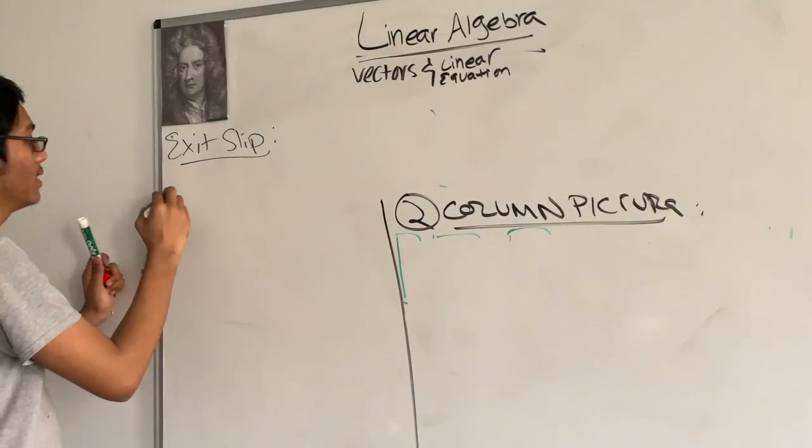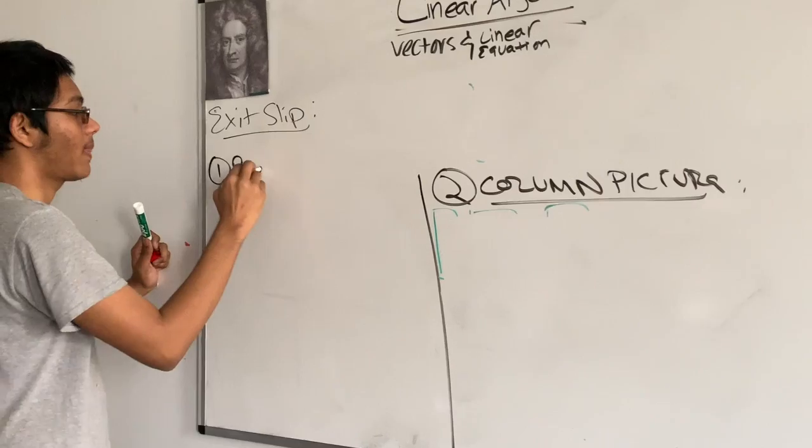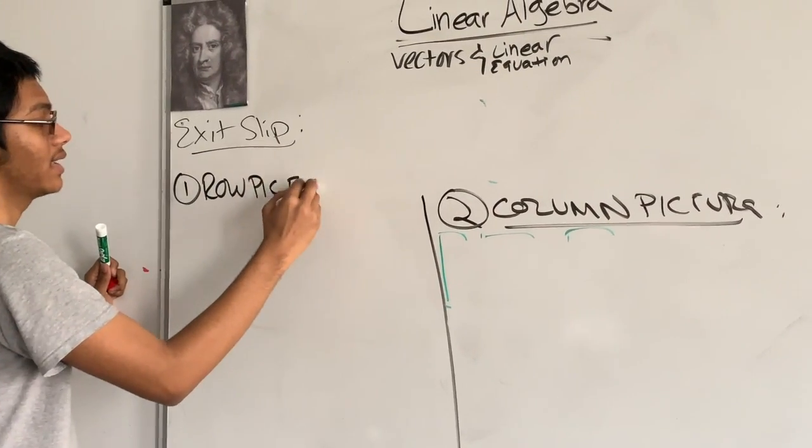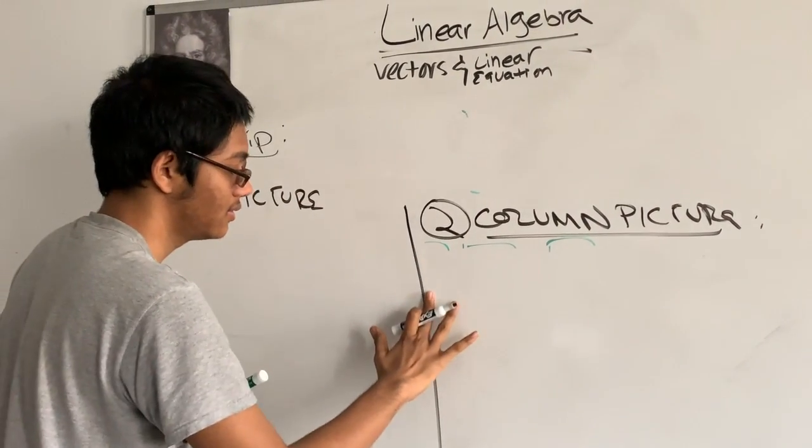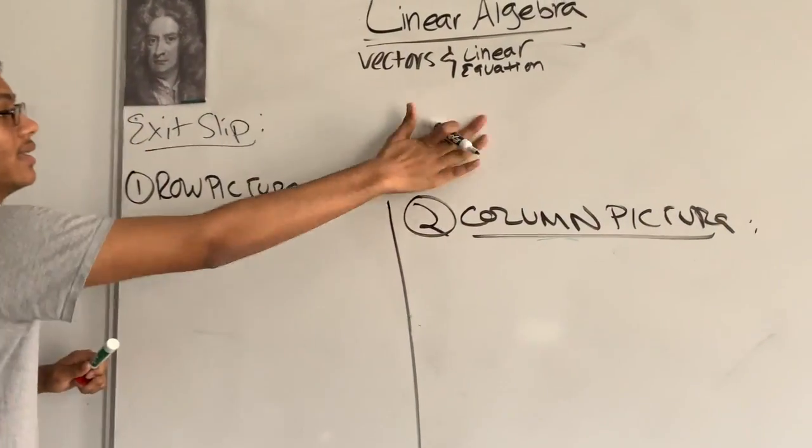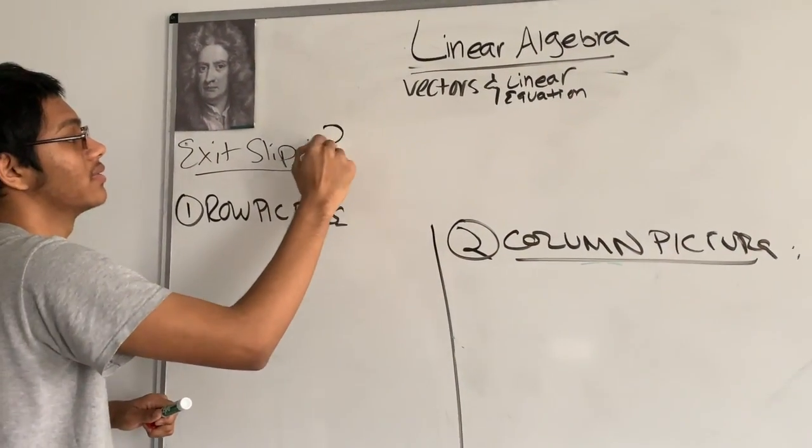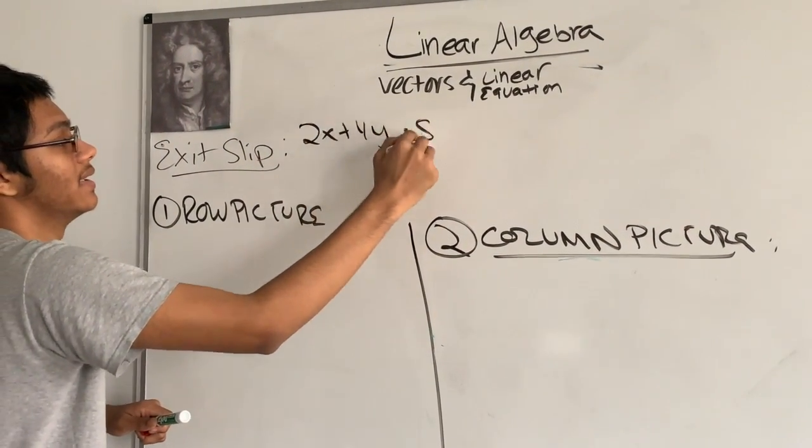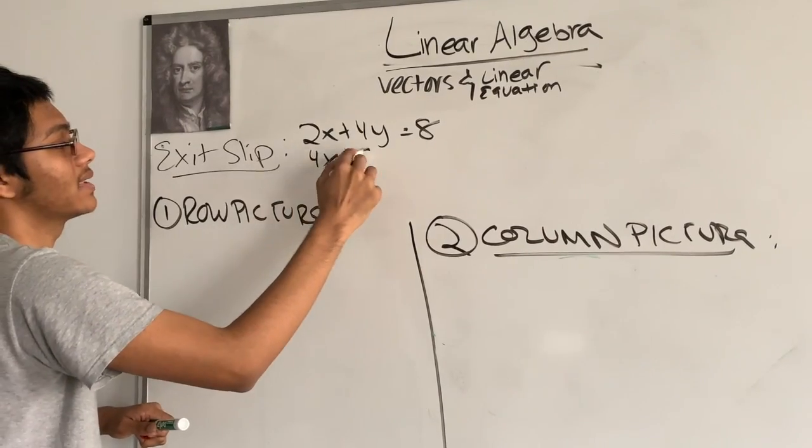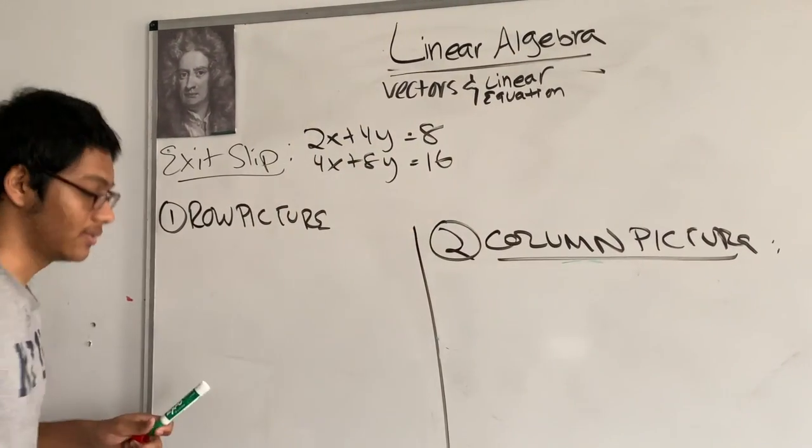So exit slip, let's take a look at another linear equation, a system of linear equations that hopefully has a solution. 2x plus 4y is 8, and 4x plus 8y is 16.